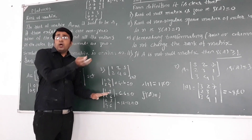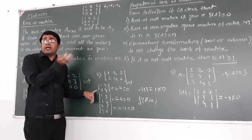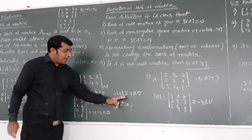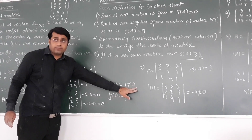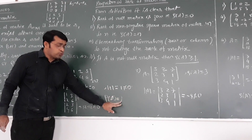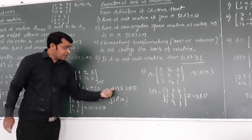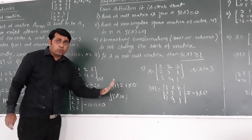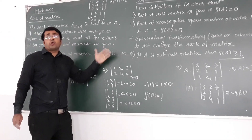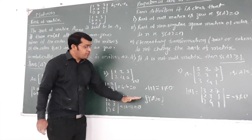Now we go to the lower order minor — 1 by 1. I take the first element, which is 1, and it is non-zero. So the minor of order 1 is non-zero. Therefore, the rank of A is 1. At least one minor should be non-zero — here we have a non-zero minor of order 1. The higher order minors, all 2 by 2, are 0 — and 3 by 3 and 4 by 4 will also be 0. Therefore, the rank of this matrix is 1.